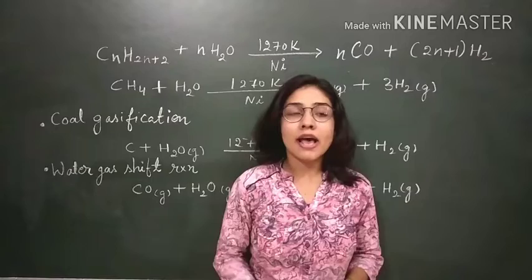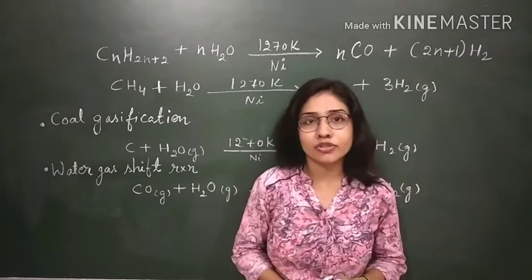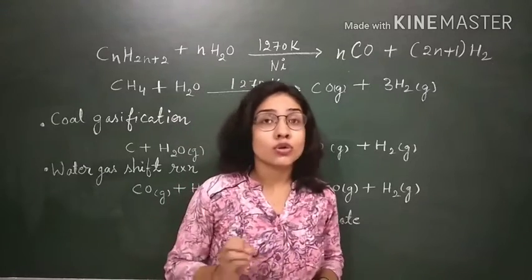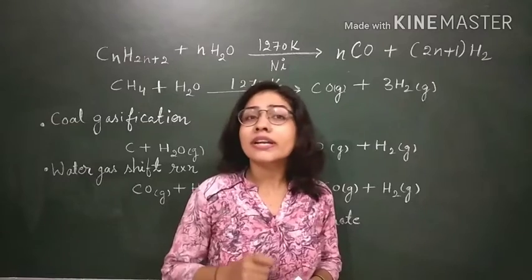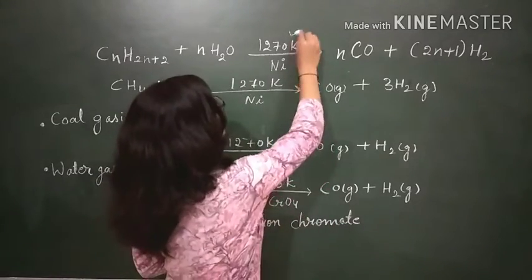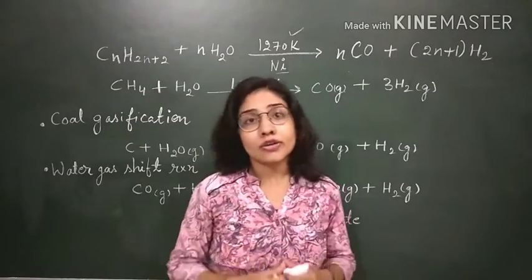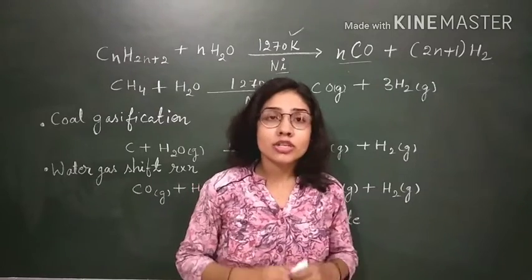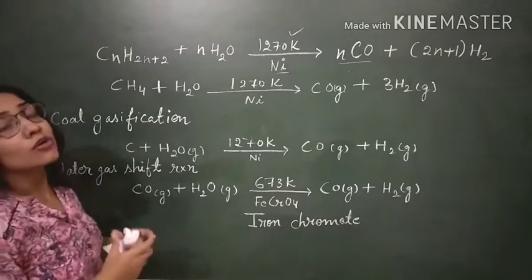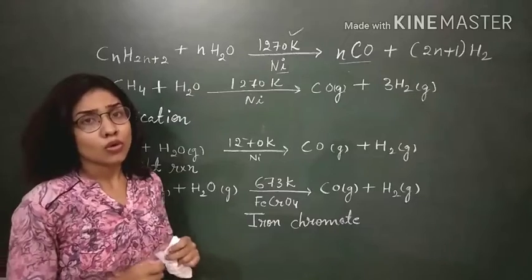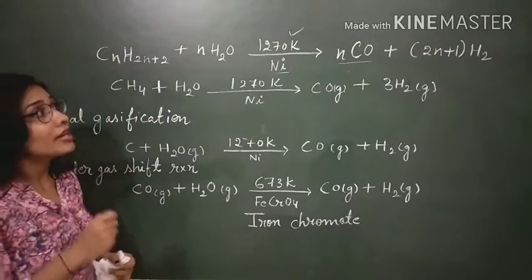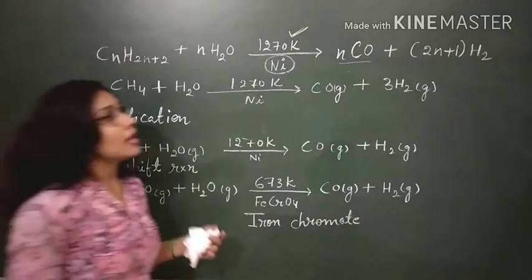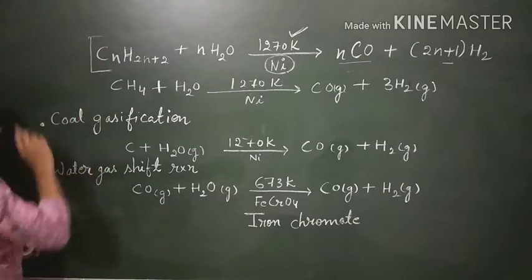Hello friends, welcome to Vipin Sharma Biology Tutorials. Today we will discuss the commercial production of dihydrogen — how dihydrogen is produced commercially. Whenever steam reacts with coal, coke, or hydrocarbons at a very high temperature of 1270 Kelvin in the presence of a catalyst nickel, it will give dihydrogen along with CO. This is the production of dihydrogen on a commercial scale.